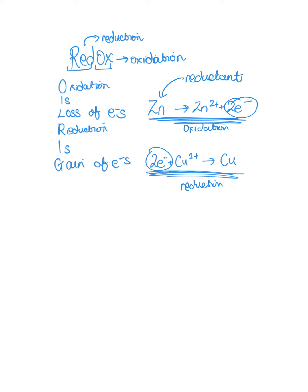So that makes this Cu2+ the oxidant. Because after it's gained the two electrons and become copper, copper will then undergo the oxidation reaction. So a good way to think about it is in an oxidation reaction, the reactant is the opposite. It's the reductant.